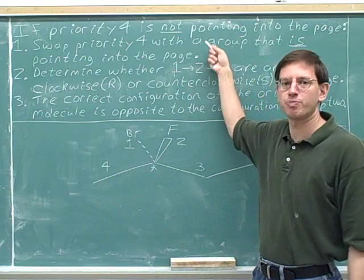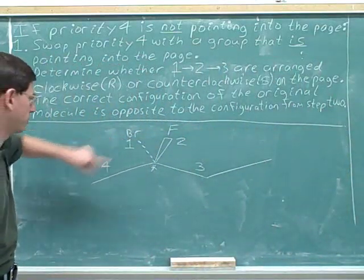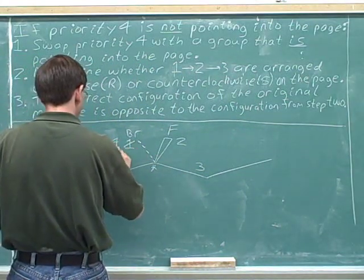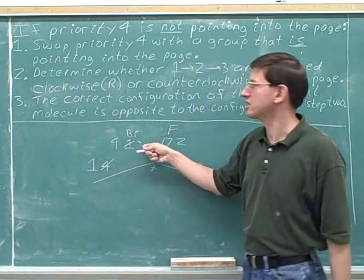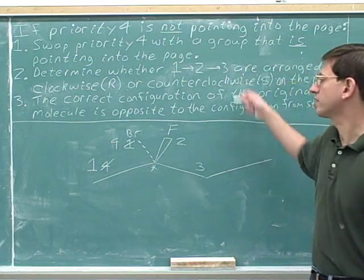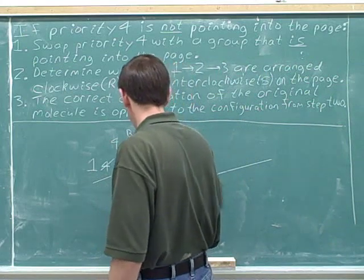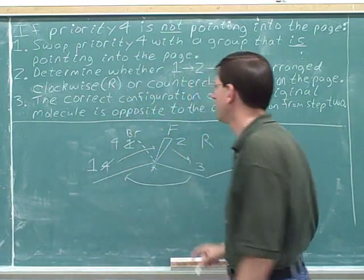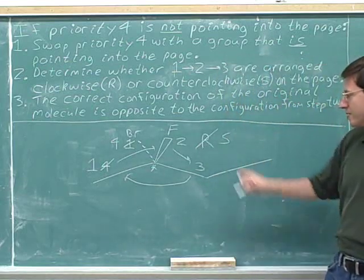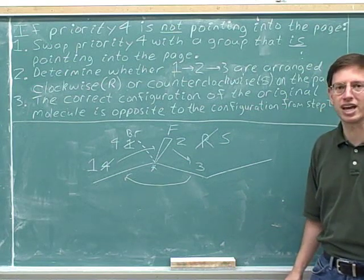We need to swap it so that it is pointing into the page. Again, we have no choice — we have to swap the number four with the number one priority, because the number one was pointing into the page. Now the number four priority is pointing into the page. Step two: the configuration of one to two to three on the page is clockwise — R. But step three: we cross out that letter, and the configuration before the swap was the opposite — S. So the correct configuration of the original stereocenter was S.